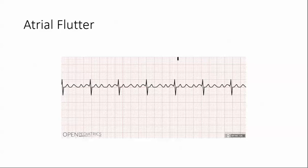The AV node acts as a gatekeeper and protects the ventricles from the extremely fast atrial rates. It accepts more than 180 impulses per minute and allows every second, third, or fourth impulse to be conducted, the ratio of which determines the ventricular rate. One of the most common ventricular rates is 150 beats per minute with an atrial rate of 300 beats per minute. The rhythm is referred to as a 2 to 1 block.